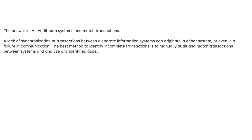Audit both systems and match transactions. A lack of synchronization of transactions between disparate information systems can originate in either system or even in a failure in communication. The best method to identify incomplete transactions is to manually audit and match transactions between systems and analyze any identified gaps.